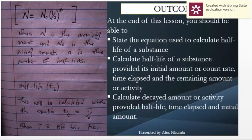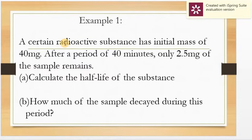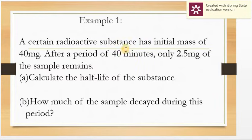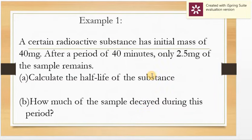To answer these two questions, the first thing is to find out how many half-lives are there in these 40 minutes. We do not know the half-life, but we know the total time that elapsed — 40 minutes. We can determine the number of half-lives in this total time. Determining the number of half-lives is the beginning point from which we can calculate the half-life and also know how much of the sample decayed.